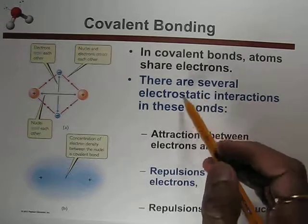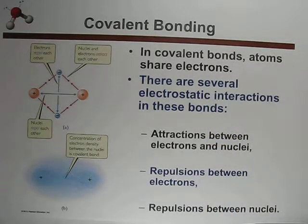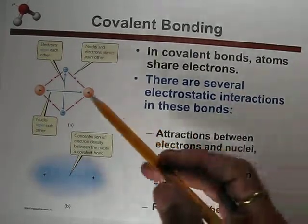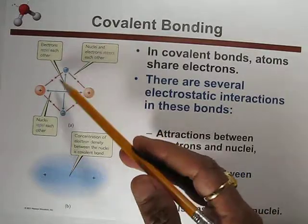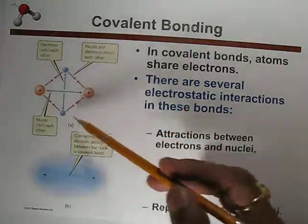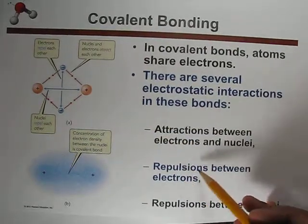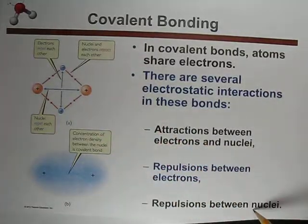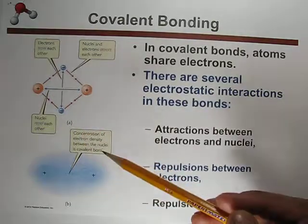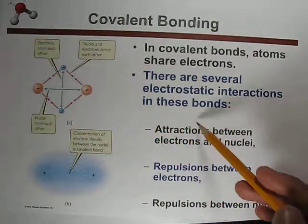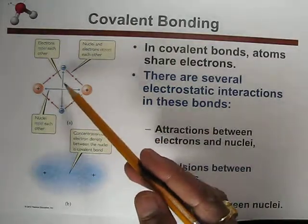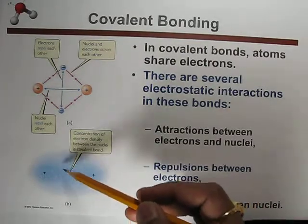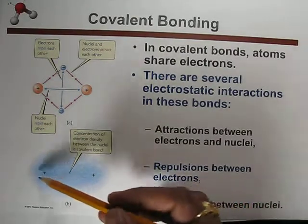There are three electrostatic interactions involved in covalent bonding. Number one is attraction between the electron and nuclei. Number two is repulsion between the two electrons on the outer side. Number three is repulsion between the two nuclei. This picture shows that electron density resides in between the two nuclei in a covalent bond.